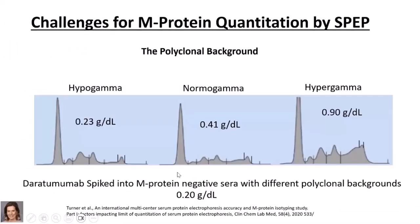Dr. Willrich headed an international survey where labs were spiked with a monoclonal drug simulating an M protein at 0.2 g/dL. The variation in results across labs comes from differences in gating against polyclonal background. The same M protein spiked into different polyclonal backgrounds can produce a wide range of quantitative results.